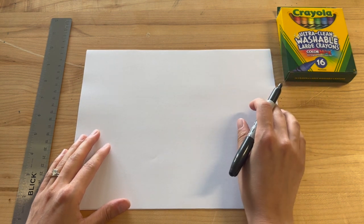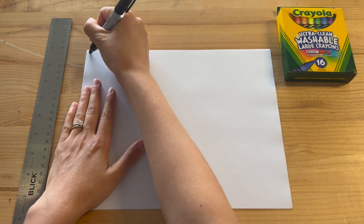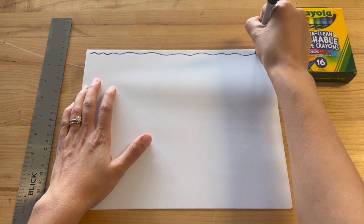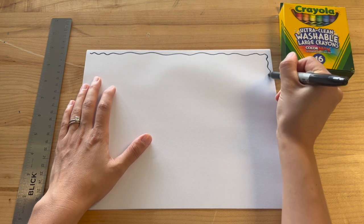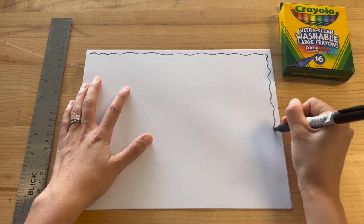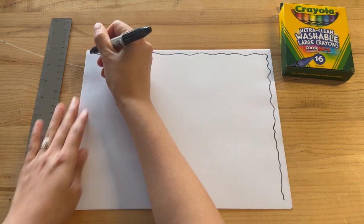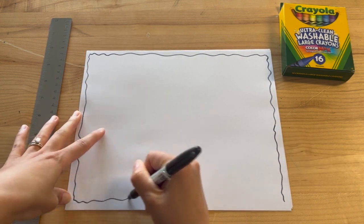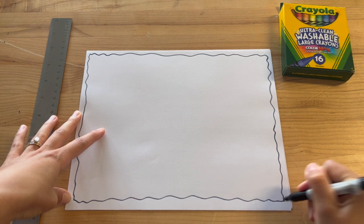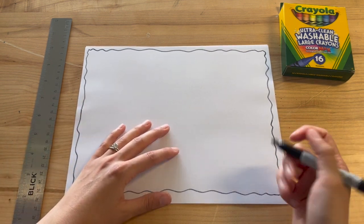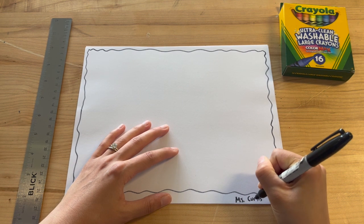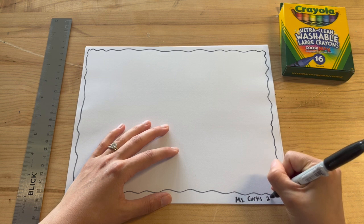The first thing that we're going to do is we're going to make our frame and name. So simply hold your paper with your opposite hand and you can either make a curvy frame or you can make a straight frame, whatever you'd like. At the bottom right of your paper, please write your first and last name. So I'm going to write Ms. Curtis and you can write your homeroom number.